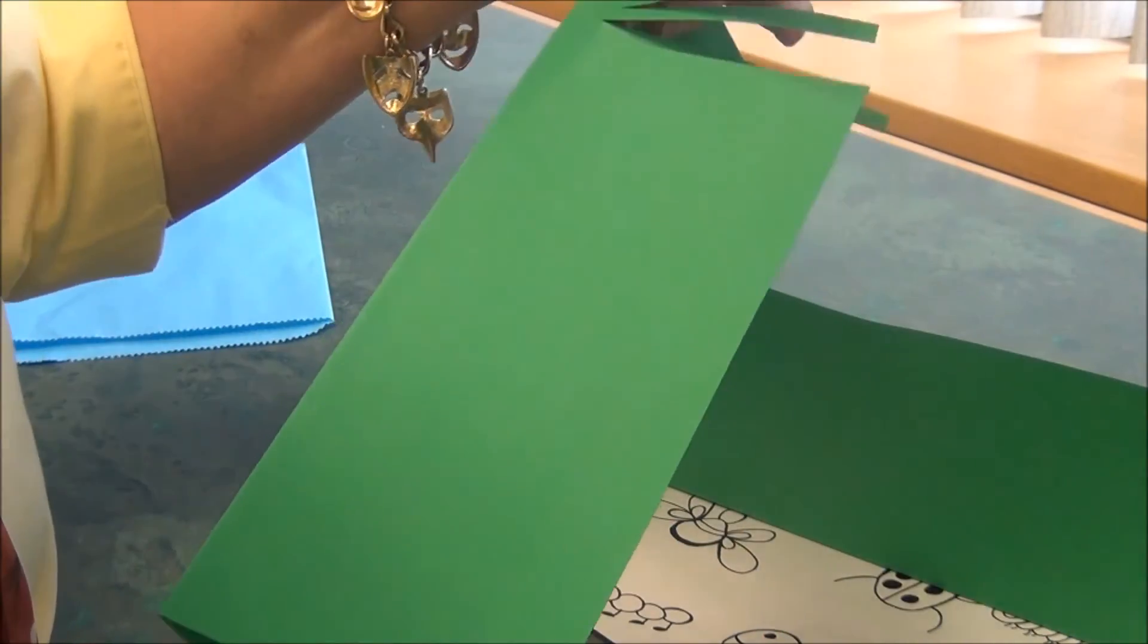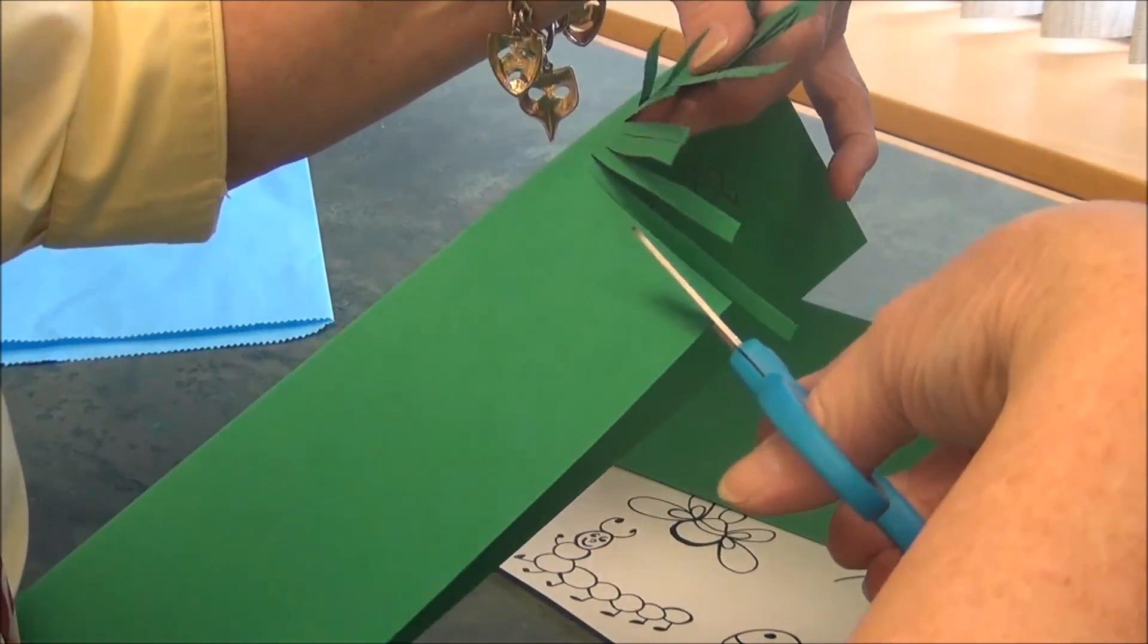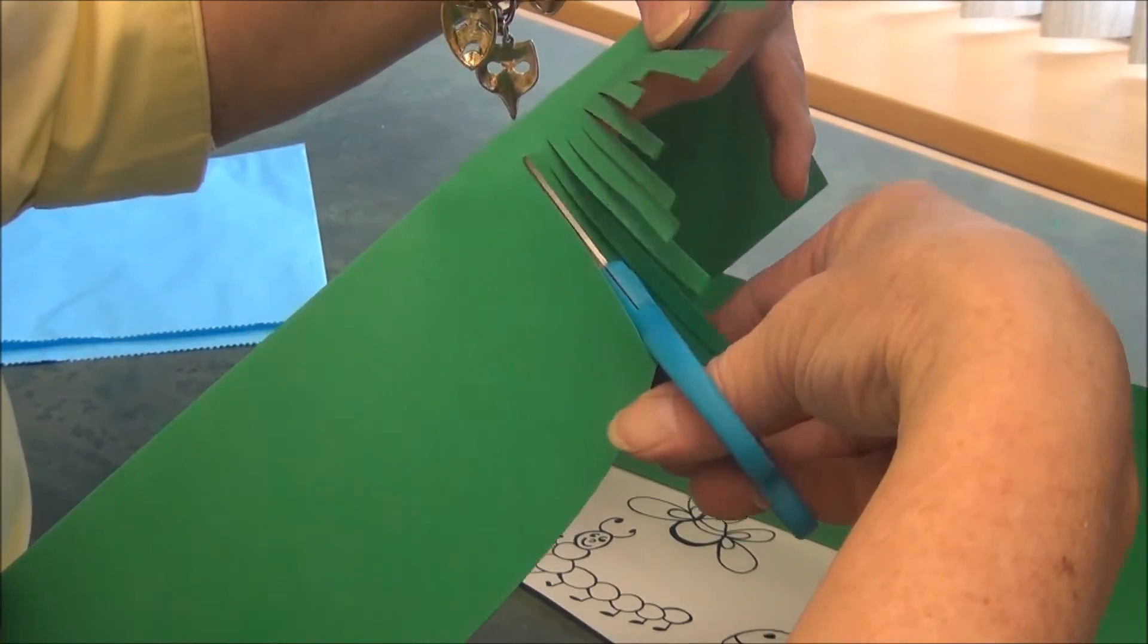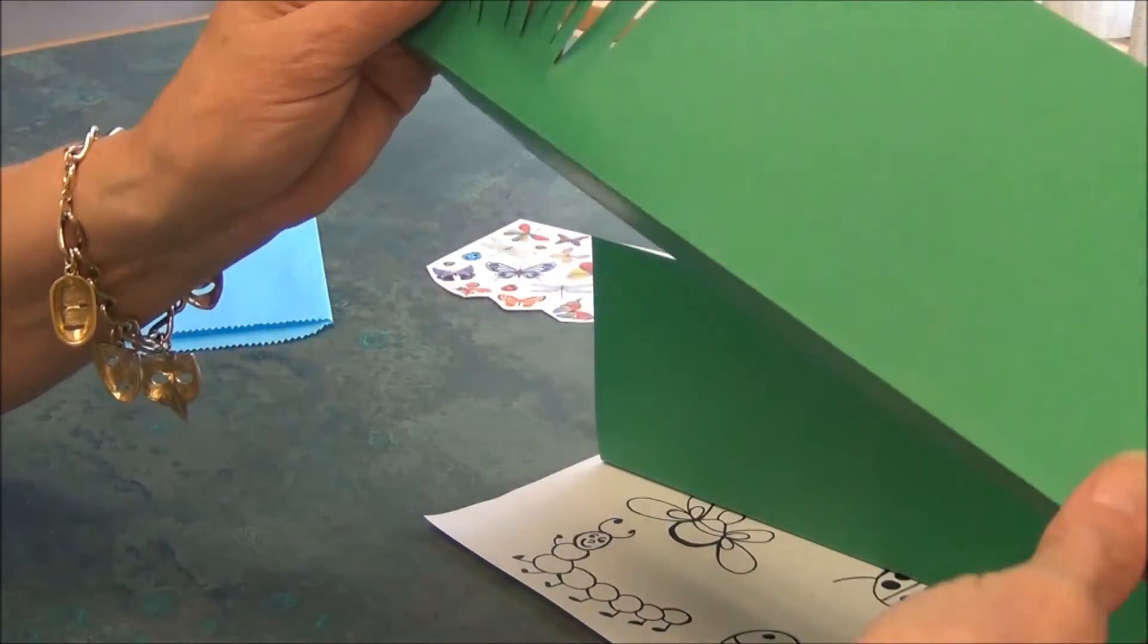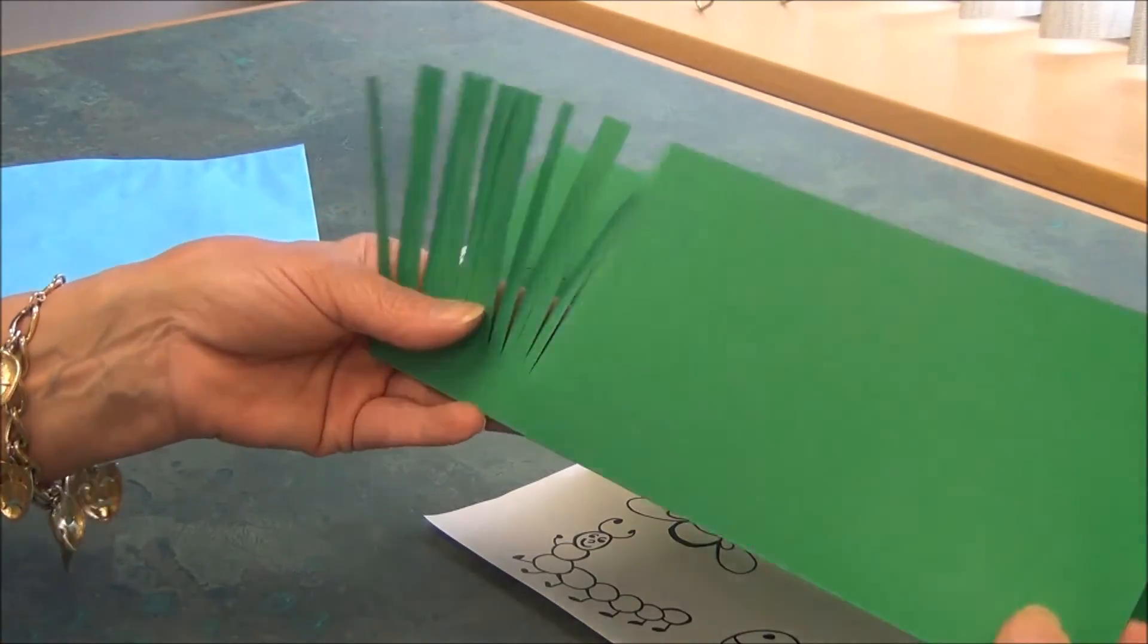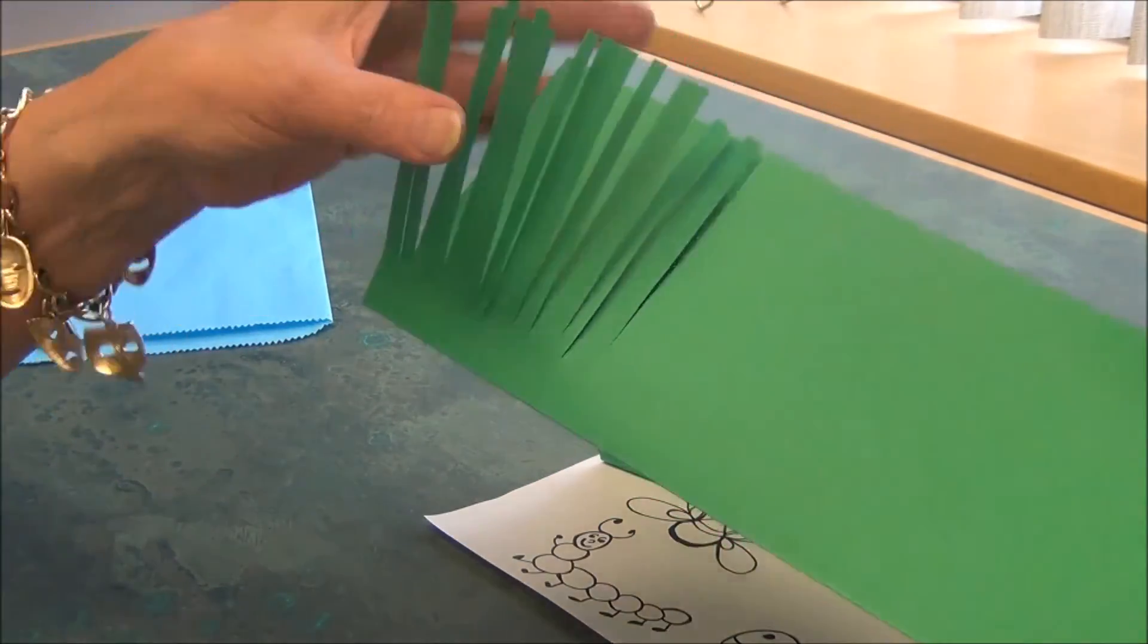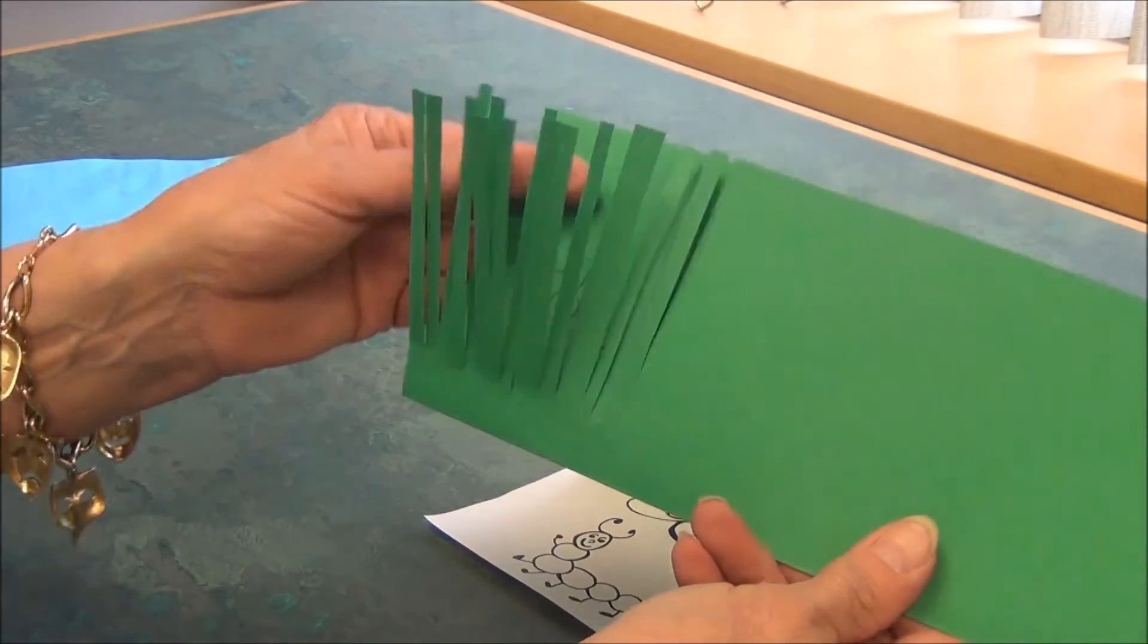That means that four strips together would equal one inch. Cut all the way across your green paper. When you've done that, you'll find that you have what looks like grass, and inside that grass are your bugs.